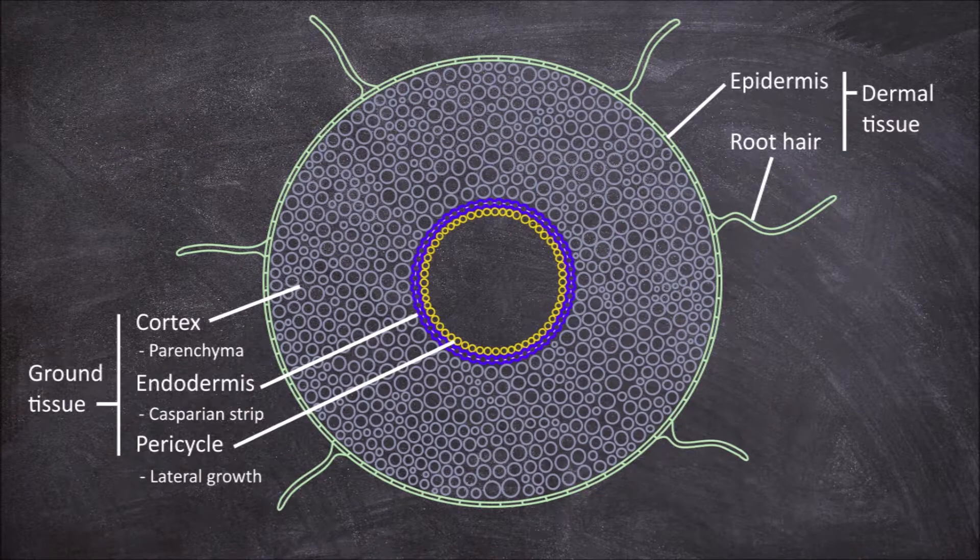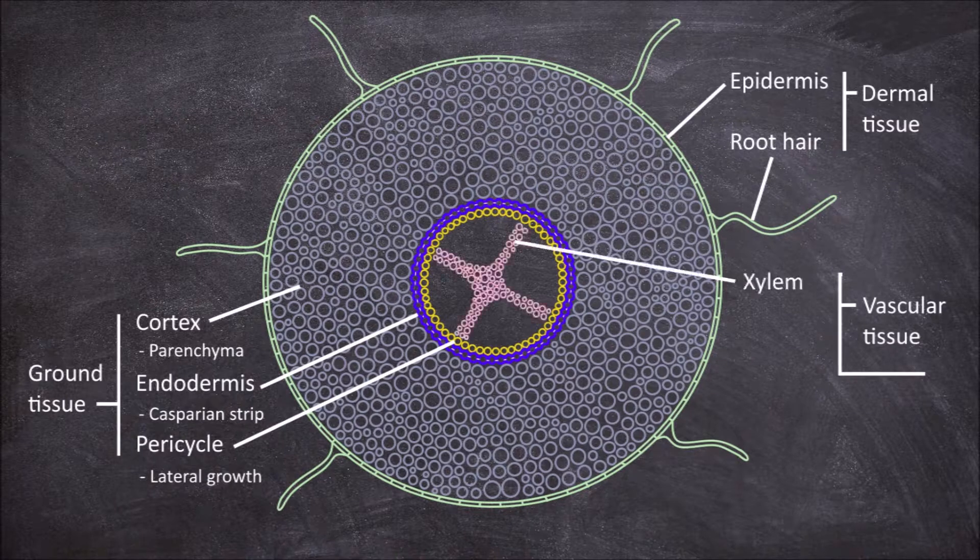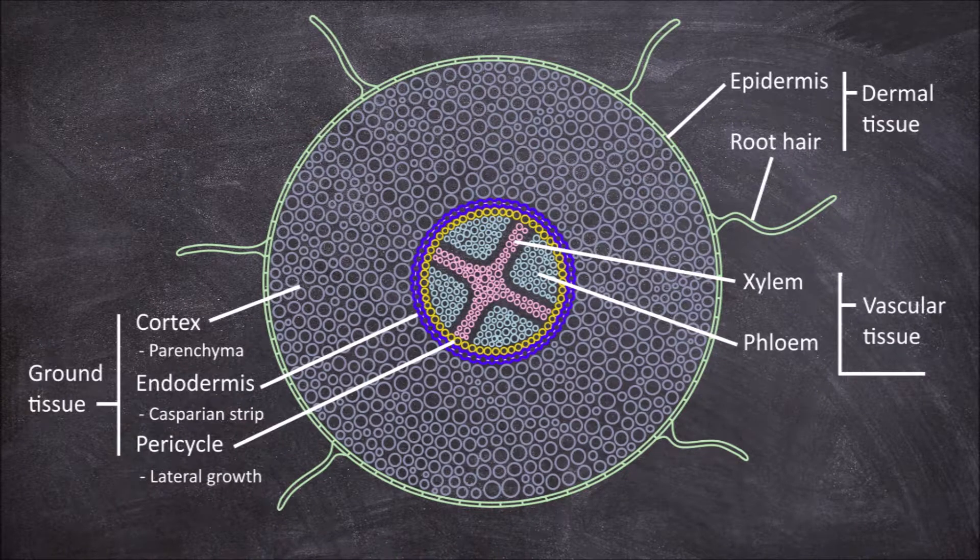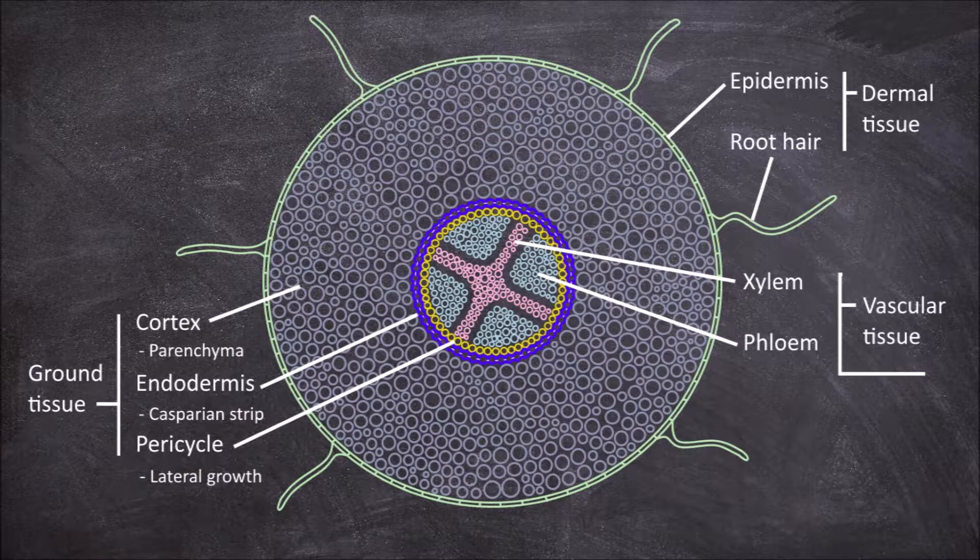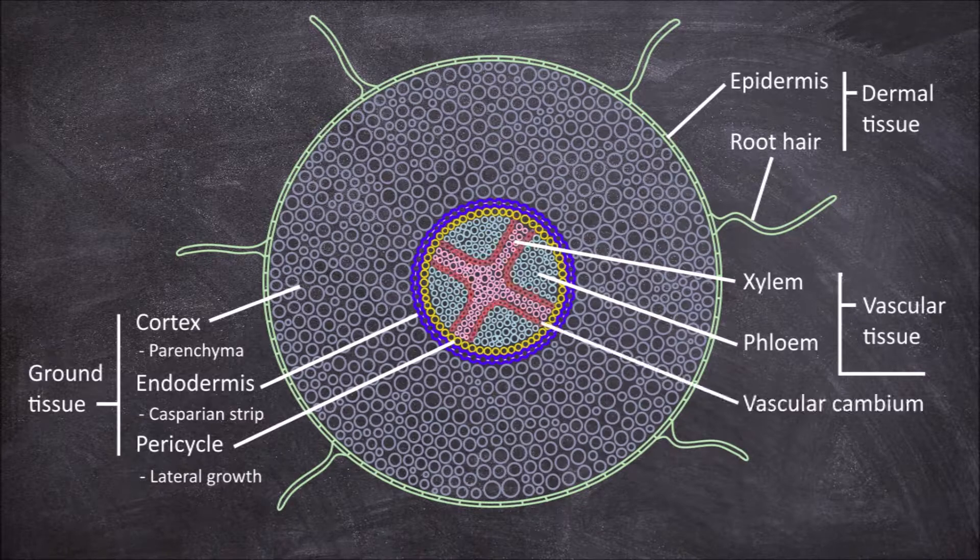The centre of the root houses the vascular tissues. The xylem and phloem are separated from one another by an X-shaped formation of the vascular cambium.